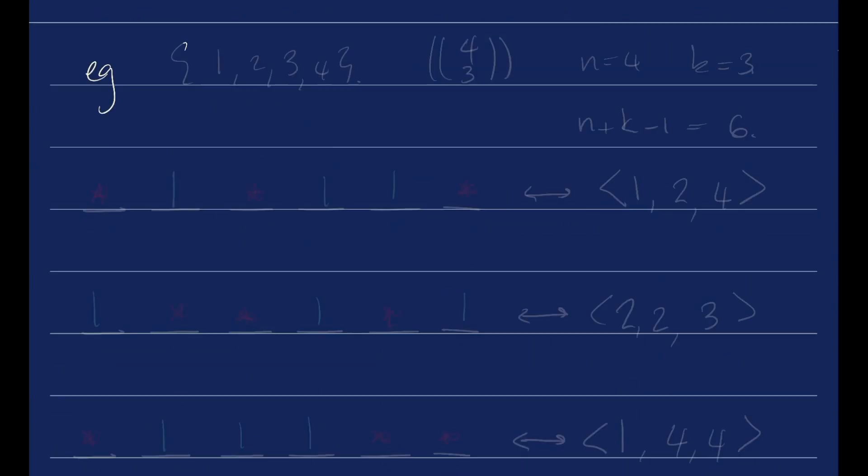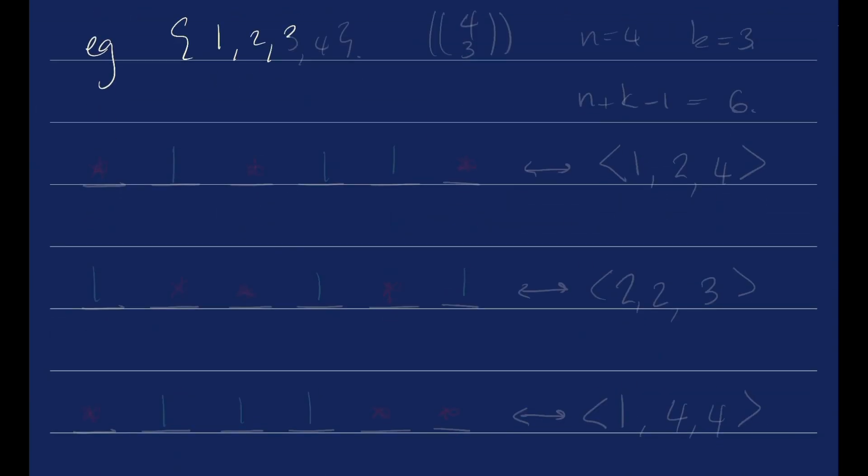For example, let's start with the set 1, 2, 3, and 4. Let's think about 4 multi-choose 3. So n here is going to be 4 and k here is going to be 3. n plus k minus 1 is going to be 6, so we need 6 objects. Let's make some spaces for them. So let's do a few examples.